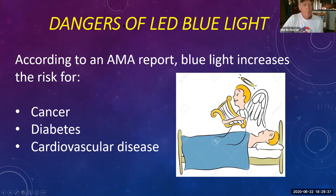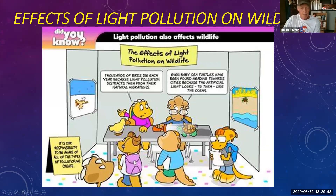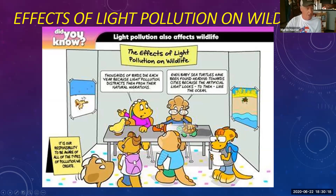Looking at light pollution as it affects wildlife: thousands of birds die each year because light pollution distracts them from natural migrations and can cause them to crash into skyscrapers. Even baby sea turtles have been found heading towards cities because artificial light looks to them like the ocean. The message is that we as humans have a responsibility to be aware of all types of light pollution we create.